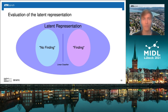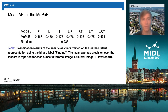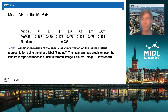We evaluate the quality of the latent representation by verifying whether a linear classifier can separate between encoded samples with pathology and without. Here you can see the classification results of those linear classifiers — we report the mean average precision over the test set for each subset, where the subset represents which modality was given as input to the model. We can see that the more modalities we give to the model, the more information it has and the better the quality of the latent representation and separability between classes.